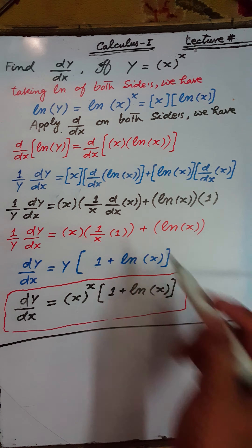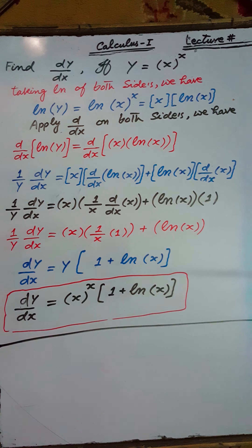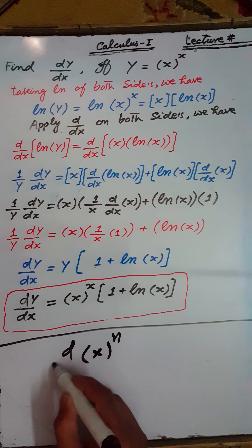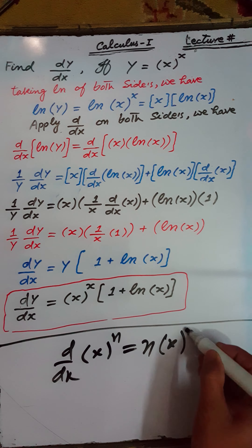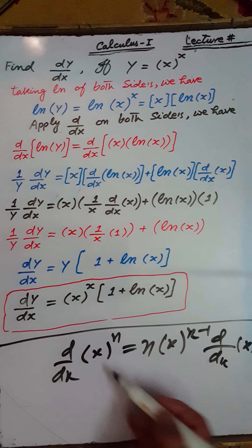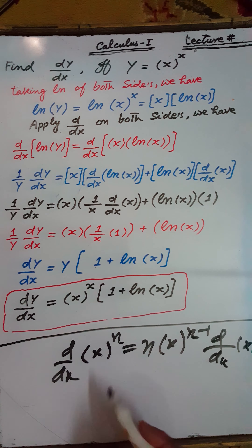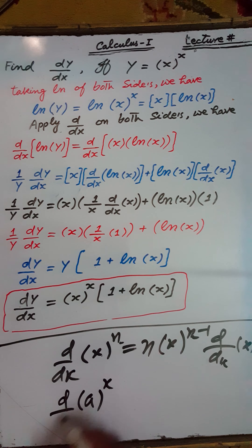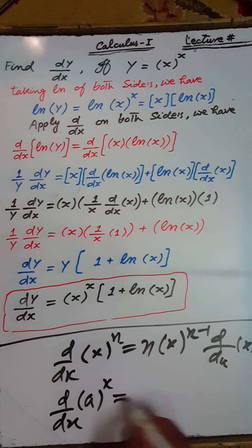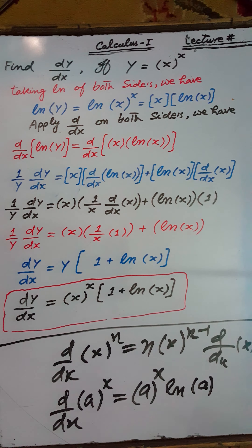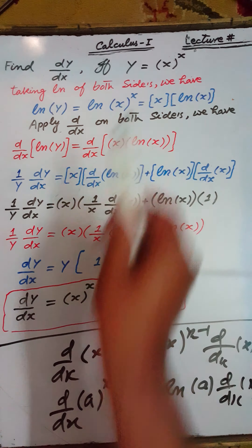To calculate the derivative of y = x^x, we cannot directly apply the power rule — where the derivative of x^n is n·x^(n-1) — because that requires a constant power. We also cannot apply the exponential rule — where the derivative of a^x is a^x · ln(a) · (derivative of the power) — because that requires a constant base. In x^x, both the base and the power are variables.